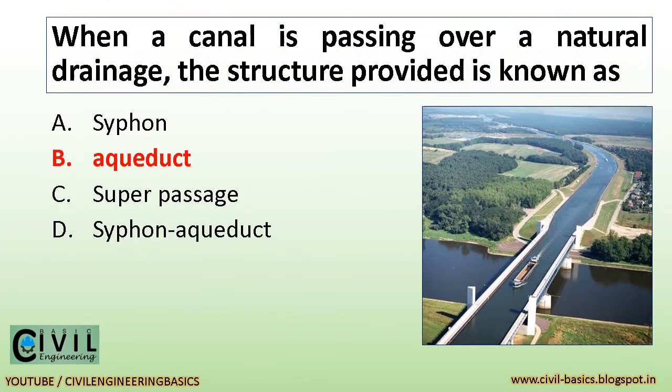When a canal is passing over a natural drainage, the structure provided is known as an aqueduct.